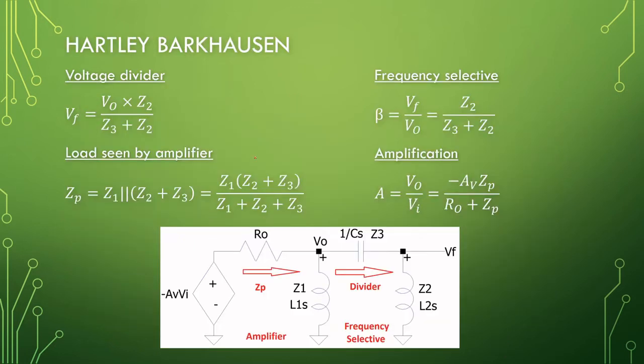Let's have a look at the Barkhausen criteria for the Hartley. From our amplifier's perspective, we have output impedance for our amplifier and it sees impedance in this direction. So Z1 parallel with a series combination of Z3 and Z2. The parallel combination is here and this is what our amplifier sees when it's loaded.